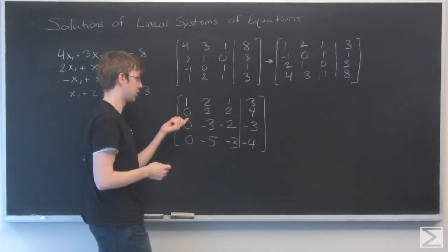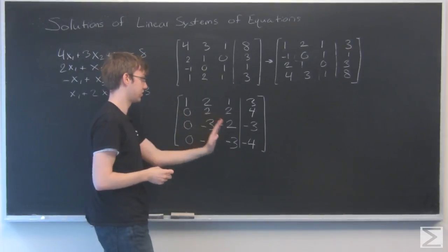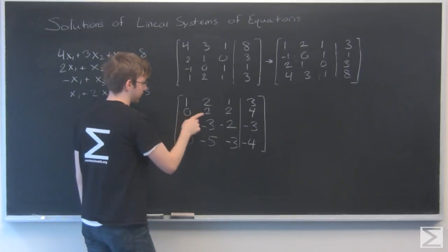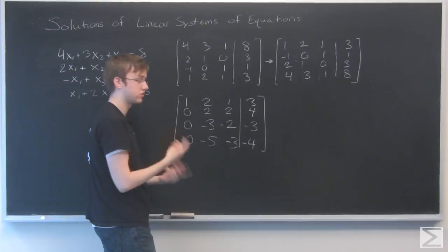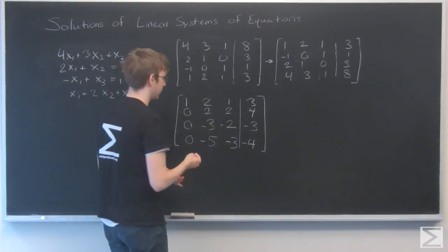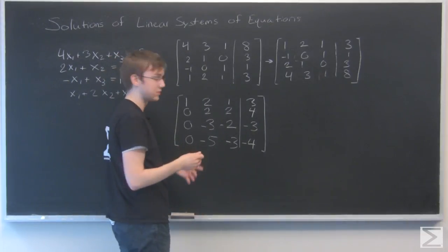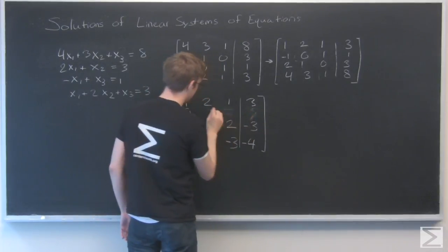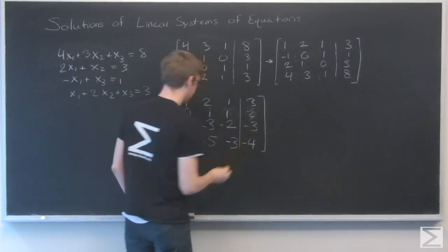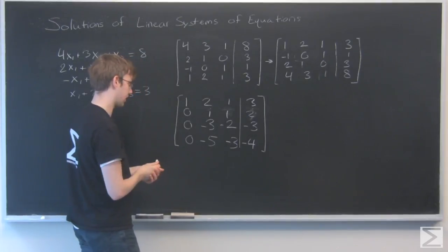Again, notice how I'm trying to get zeros in this row, and I want to keep pushing these zeros further and further back. Next, I'm going to try to get a 1 right here. So I'm going to divide this row by 2 right now to get a 1 there. So now it's 1, 1, and 2.